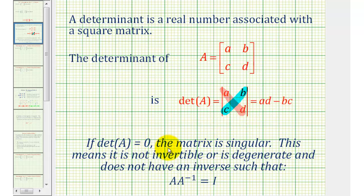If the value of the determinant is equal to zero, the matrix is singular. This means it is not invertible or is degenerate and does not have an inverse, such that A times A inverse is equal to the identity matrix. So if the determinant of matrix A is equal to zero, then matrix A does not have an inverse.